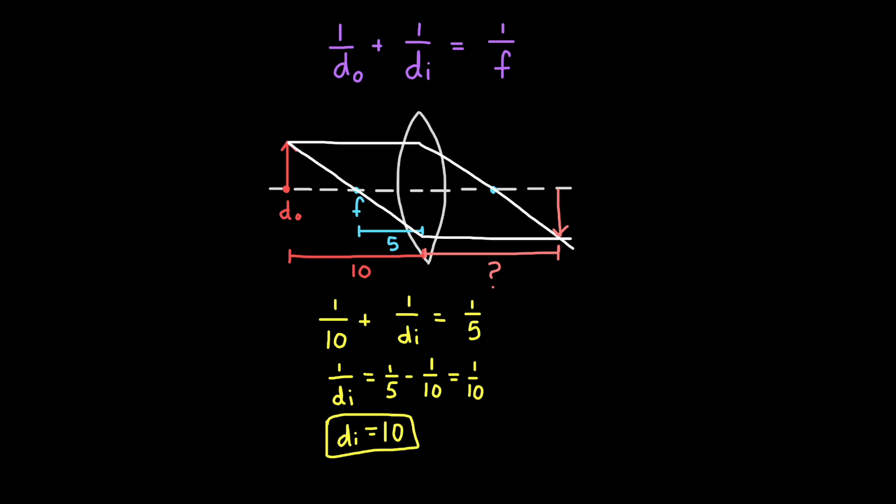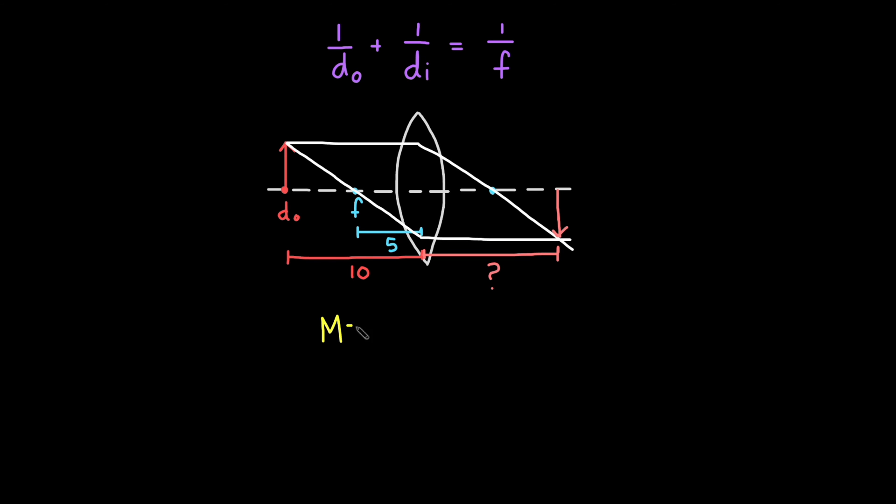In our previous example, the distance to the image was 10 cm. The distance to the object was also 10 cm. Our magnification is thus negative 10 over 10, or negative 1. A ratio of 1, or a negative 1, indicates that the image is the same size as the object. The negative magnification indicates that the image is inverted.